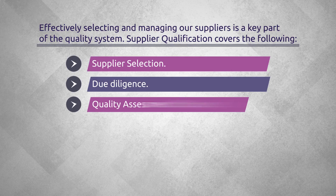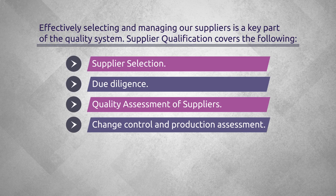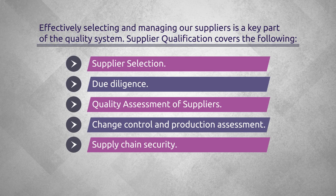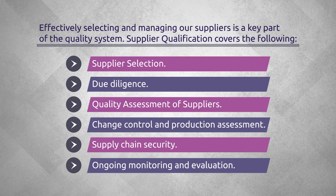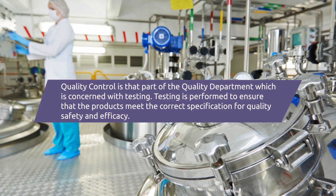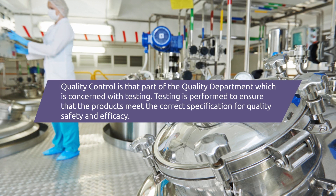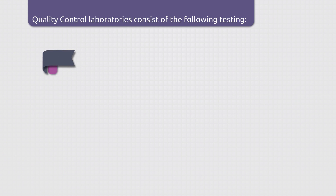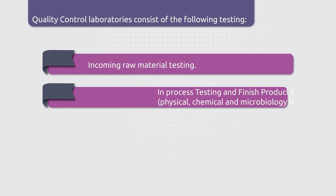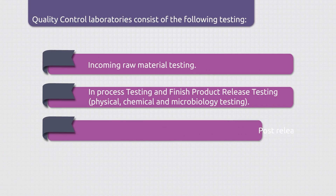For the QSE of supplier qualification, careful selection and management of our suppliers is key to ensuring consistent quality of finished products. Next, QC testing and stability. The QC lab tests raw materials, products in the process of being manufactured, as well as finished product and environmental samples. The QC lab also manages the stability program, which supports the shelf life of our products.